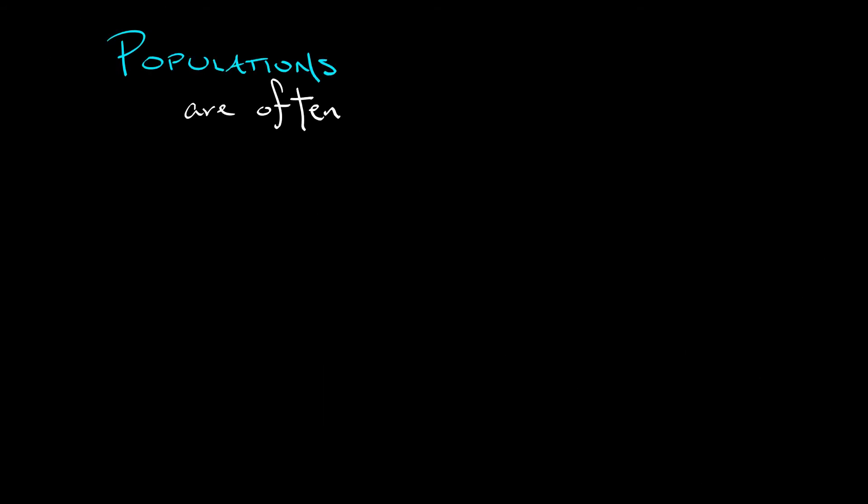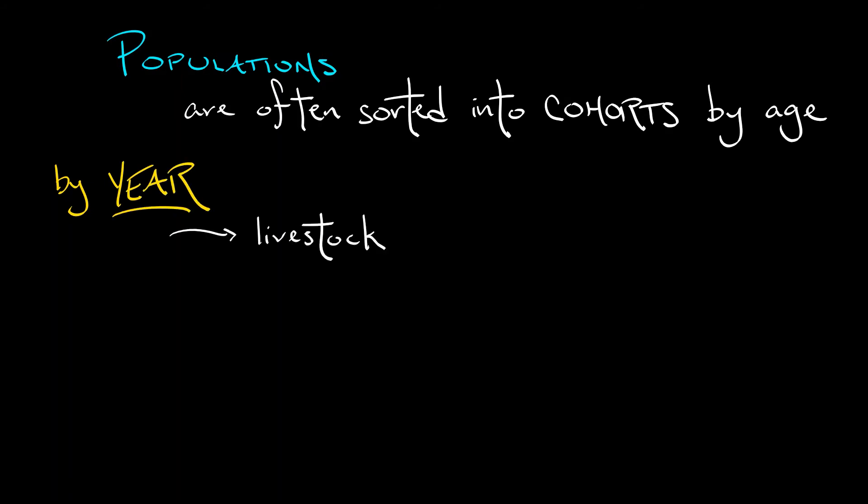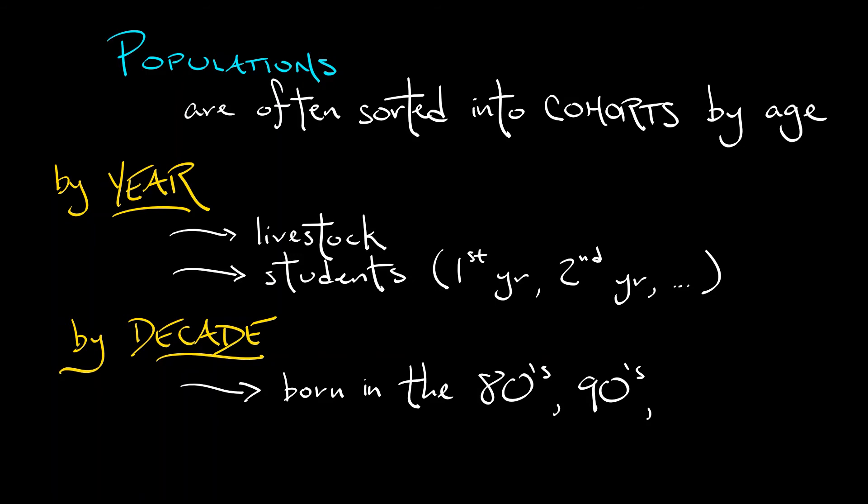Now, this is not too uncommon. You're used to thinking about sorting things out by, say, year. If, for example, you raise livestock, you keep track of your stock by year. Or if, like me, you raise students, then you keep track of them by year. First-year students, second-year students, third-year students, etc. One often keeps track of human populations by decade. We talk about people who were born in the 80s or the 90s or even earlier than that. So let's do some dynamics on these different age cohorts.